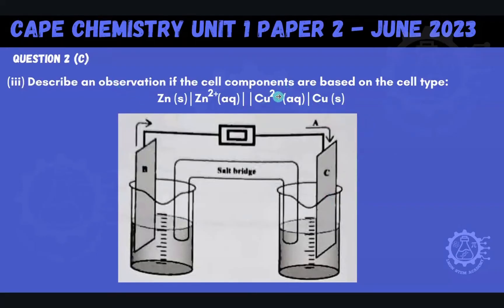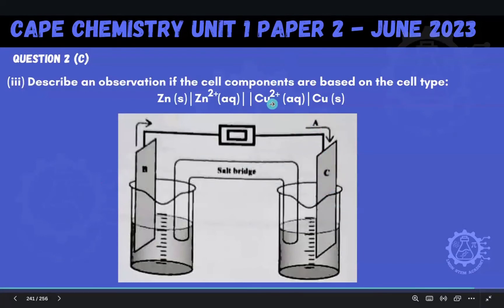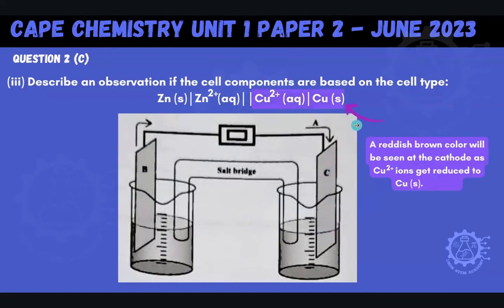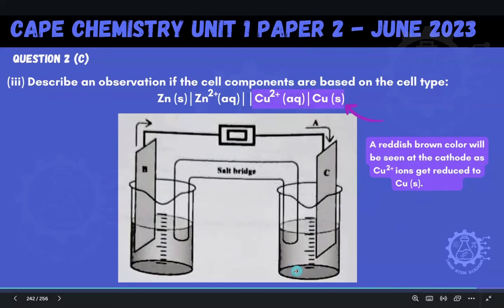If we take the cathode — what's going on at the cathode is reduction. This species is getting reduced to copper solid. In light of that, we would expect to see a reddish-brown color at that cathode as the Cu²⁺ ions are getting reduced to copper solid. So we would expect to see a reddish-brown color because copper solid is going to be deposited onto the electrode.